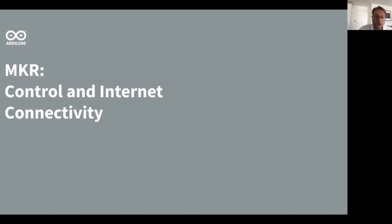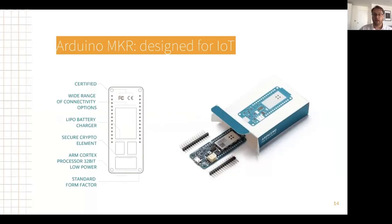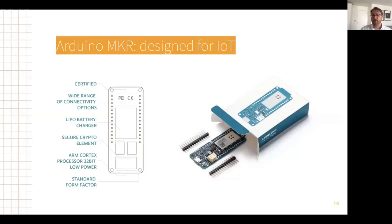Let's get into the MKR family — the microcontroller family we are launching a kit around. The MKR boards all share the same form factor. Each one is certified and has a large range of connectivity options: a microcontroller with Wi-Fi, or a microcontroller with a cellular module, but they're interchangeable. They have a LiPo battery connector and charging circuitry, each has a secure element for accelerating crypto functions and storing keys securely. They're all based on the Cortex M0 processor — the Microchip AT-SAM D21, a 32-bit processor, significantly more performant than an Arduino Uno.